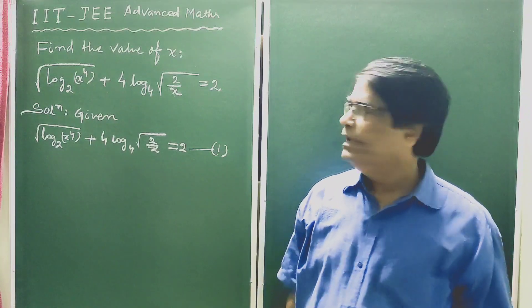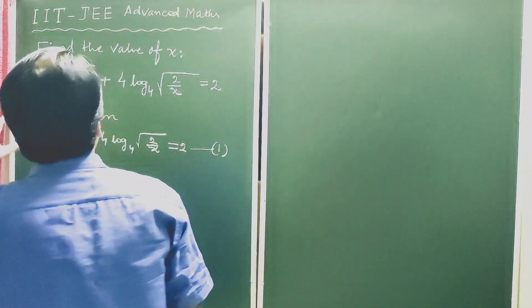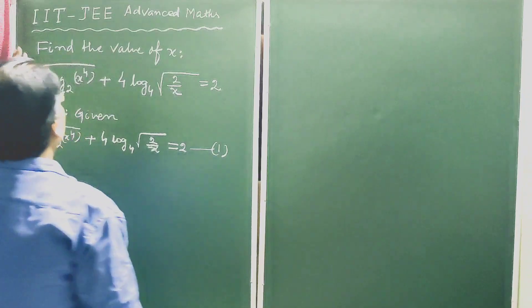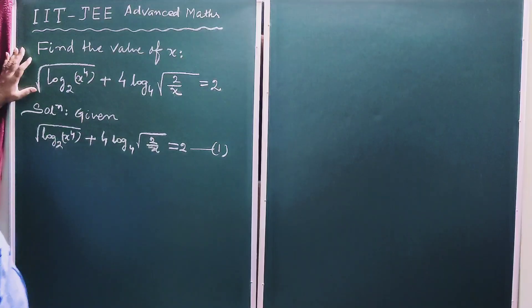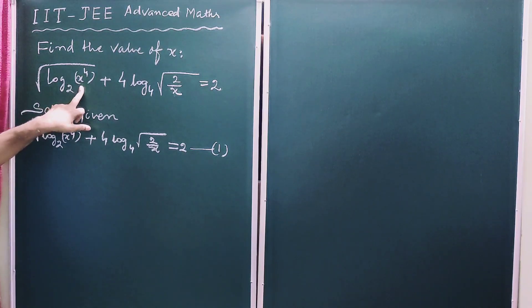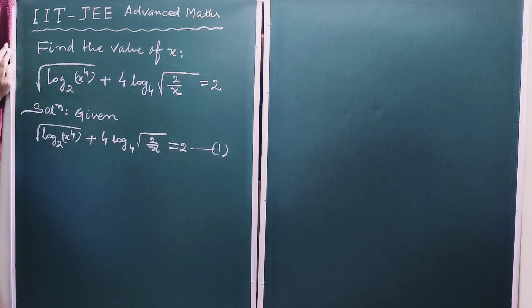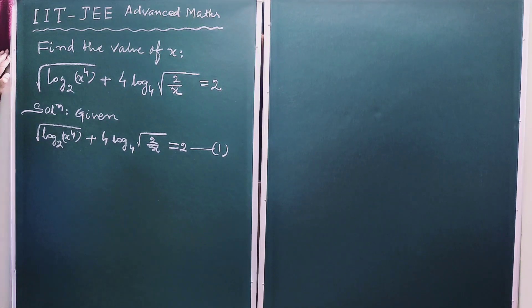Hello students, let us solve a logarithmic equation and we have to find the value of x. The question is: log base 2 of the fourth root of x, plus 4 times log base 4 of the square root of 2 over x, is equal to 2.